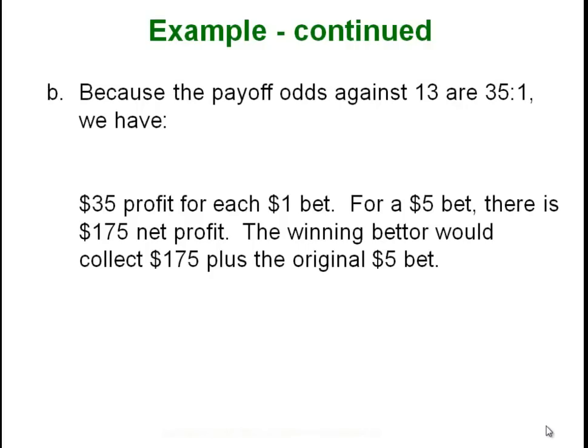Payoff odds are different — they only matter if you're actually betting. A 35-to-1 payoff means you get $35 profit for every $1 bet. So if you bet $5, you get 35 times 5 equals a net profit of $175. You also get your $5 back, so you really win $180 in total, but your net profit was $175 because you paid $5 to play.